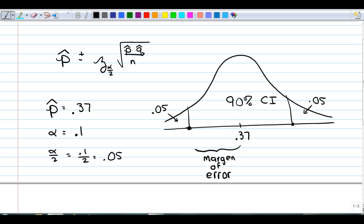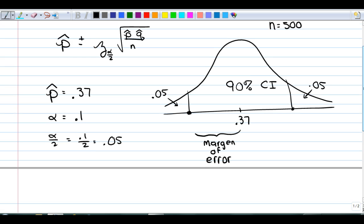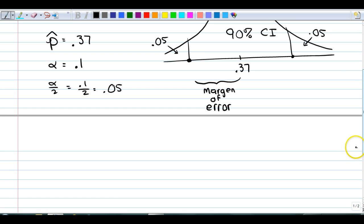Let's say n is 500. To do our confidence level by calculator, we're going to press the stat key, arrow over to tests. Now, if you look at choice 5,